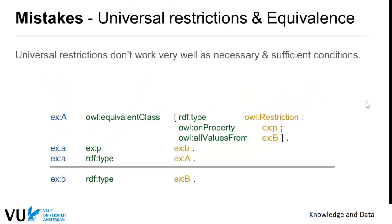Another typical mistake is with equivalence classes — that is, necessary and sufficient conditions in combination with universal quantification. If you define class A as the class of things where everything in an A-p relation has value B, then something related to an object of class A via p is automatically inferred to be of type B because of the universal quantification. This is again an over-commitment, so you have to be very careful when using equivalent classes combined with all-values restrictions.